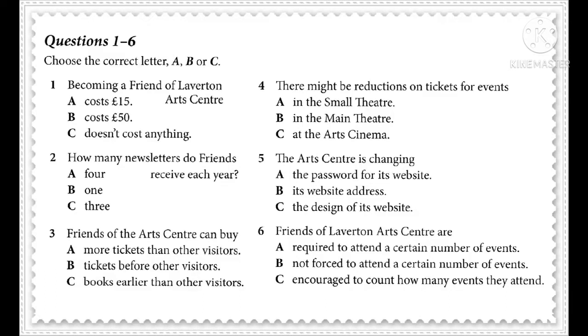There are actually quite a few. As a friend of Laverton Arts Centre, you'll receive a newsletter every three months, with information on all the forthcoming events. That sounds useful. You also get priority booking for shows and concerts in the main theatre. Can you explain how that works exactly? Yes. What that means is that when tickets go on sale, for the first two days, they're only available to Friends of the Arts Centre. So, as long as you book early, you can make sure you get seats.